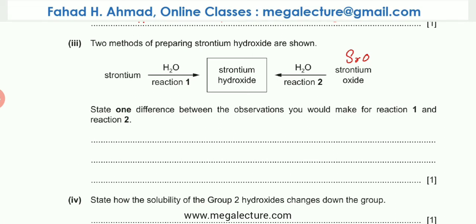State one difference between the observations you would make for reaction 1 and reaction 2. I'm going to write the equations. Strontium oxide reacting with water forms strontium hydroxide. Strontium reacting with water produces strontium hydroxide plus hydrogen gas. The main difference is that effervescence or bubbles of H2 gas would be seen when strontium reacts with water.